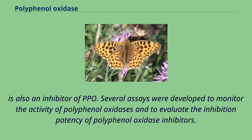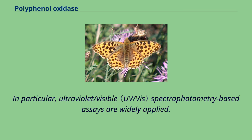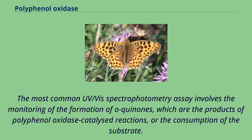Several assays were developed to monitor the activity of polyphenol oxidases and to evaluate the inhibition potency of polyphenol oxidase inhibitors. In particular, ultraviolet/visible spectrophotometry-based assays are widely applied. The most common UV/vis spectrophotometry assay involves the monitoring of the formation of O-quinones, which are the products of polyphenol oxidase catalyzed reactions, or the consumption of the substrate.